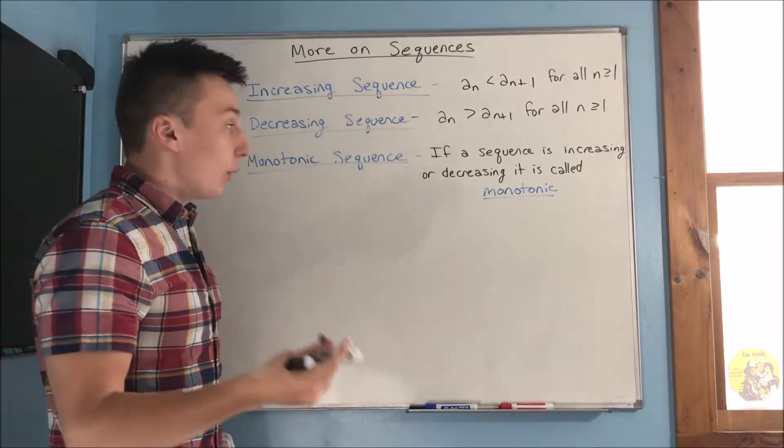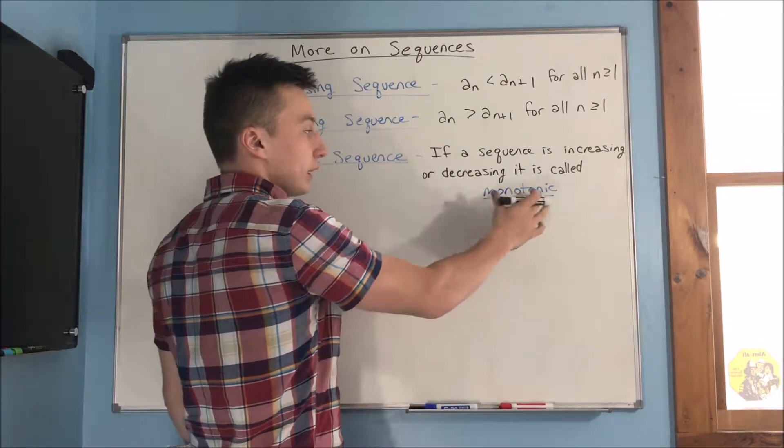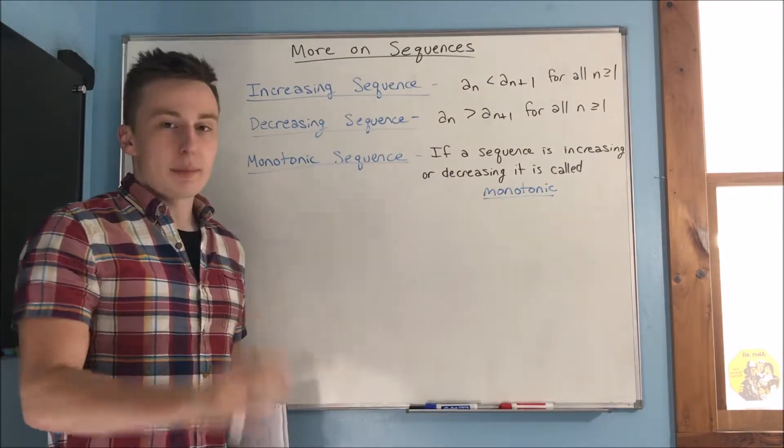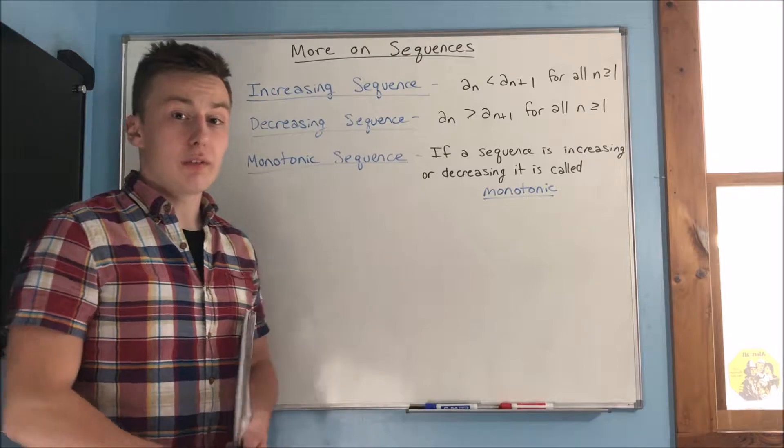And that's where all n is greater than or equal to one. Now, if a sequence is either purely increasing or decreasing, it's called monotonic. So that's a term that's just going to pop up a lot and it's definitely really good to know.